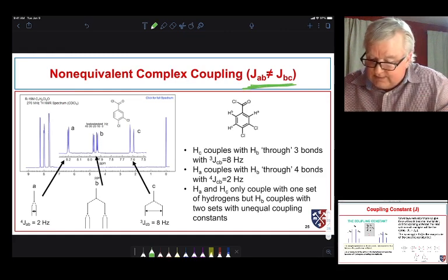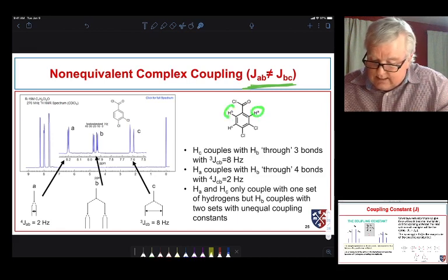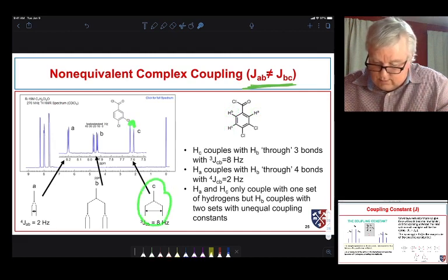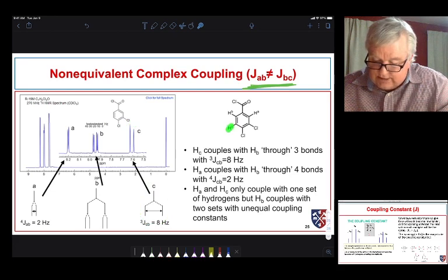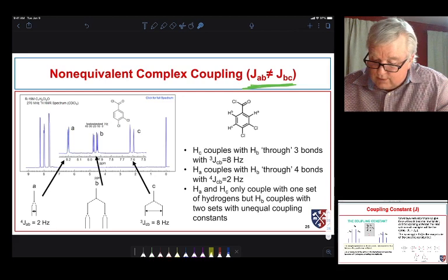Let's take a look at non-equivalent coupling in a case where we have a big coupling constant and a small coupling constant. In this particular molecule, we have three signals. We have HA, HB, and HC. What we see is a nice, simple signal over here. That's due to this coupling. This is due to this proton right here, HC. Okay, and it's coupling with B with a coupling constant of 8 hertz. Over here, we see nice, simple coupling. This is due to proton A, and it seems to be coupling with something.